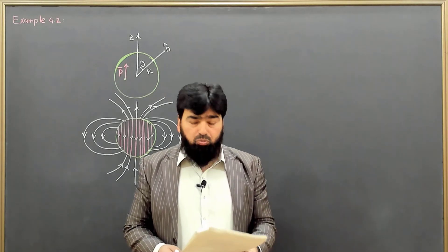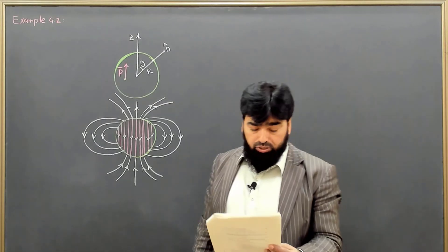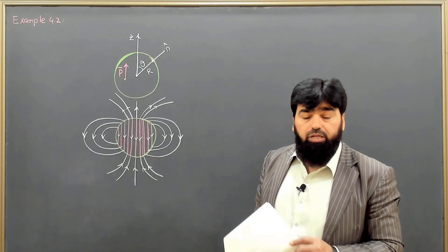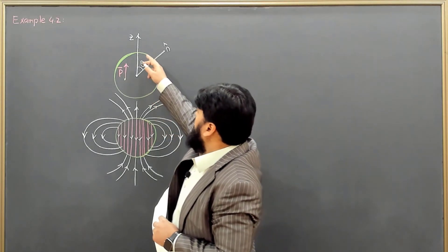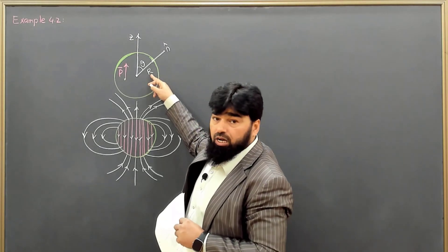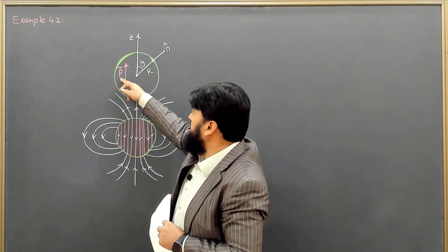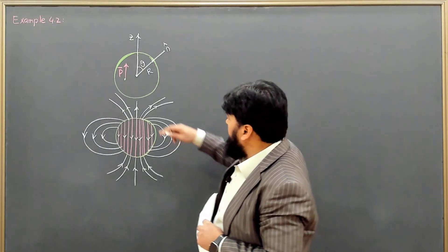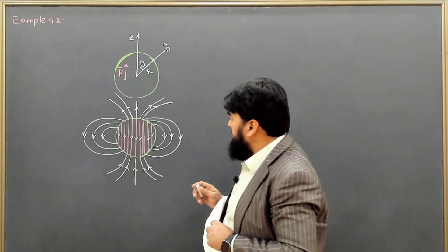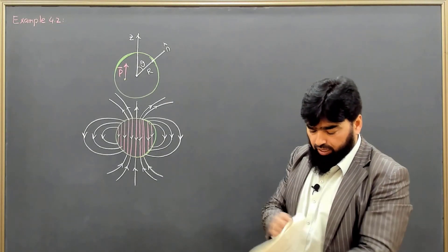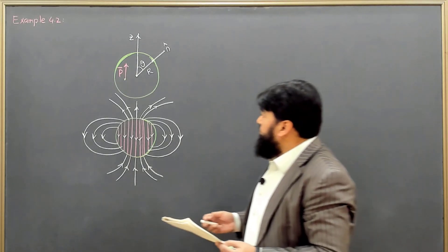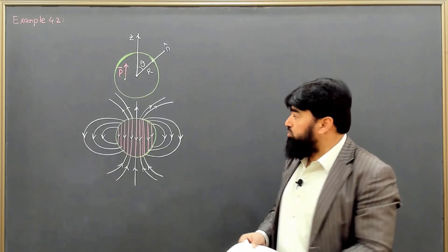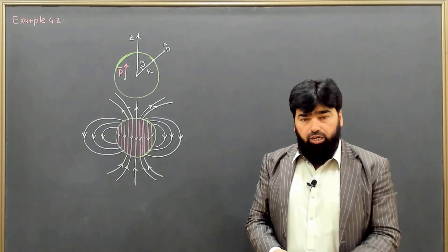We solve example 4.2, which asks us to find the electric field produced by a uniformly polarized sphere of radius R. We have a sphere of radius R with uniform polarization P, and we consider this polarization in the z-direction. We need to calculate what electric field such a polarization will produce.